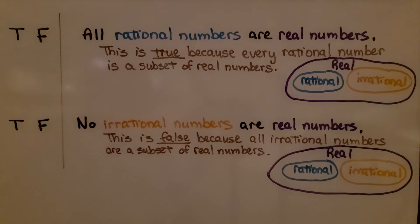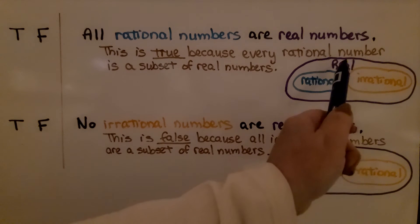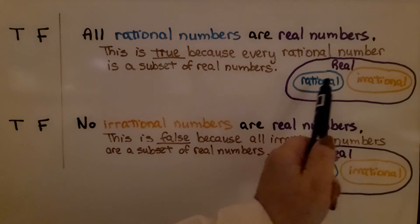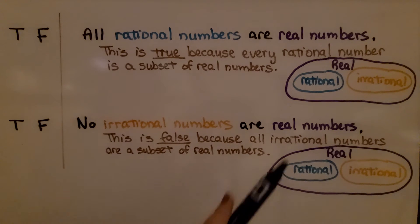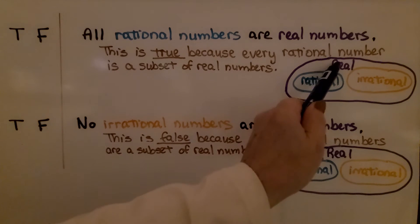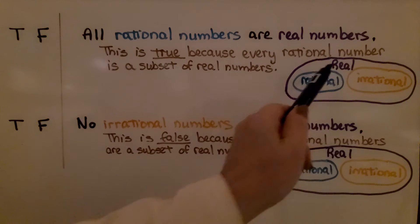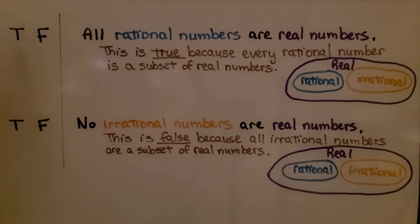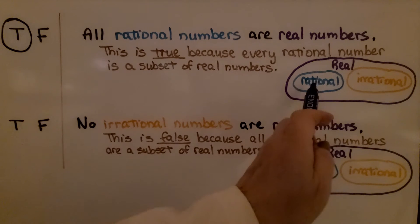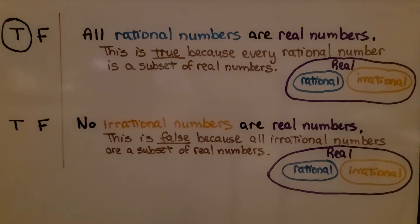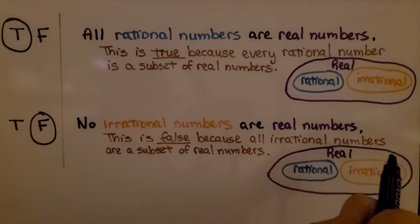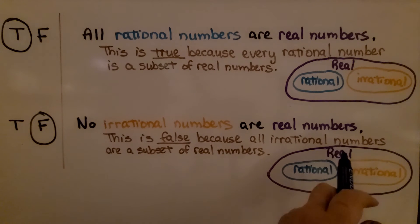This one says all rational numbers are real numbers. So remember, in the set of real numbers there are rational and irrational. All rational numbers are real numbers? Yes. This is true, because every rational number is a subset of real numbers. Here it says no irrational numbers are real numbers. Well, this is false, because all irrational numbers are a subset of real numbers.